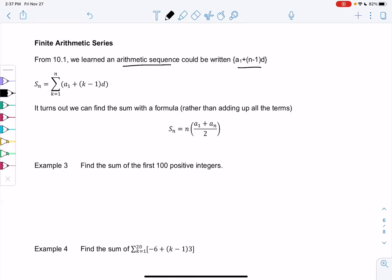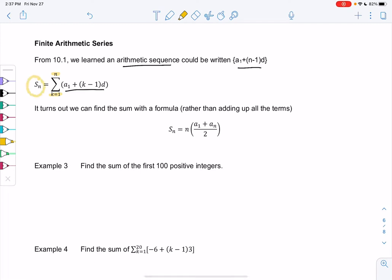In series form, we're going to take those individual terms, a1 plus k minus 1 times d. I'm just using a different letter, it's arbitrary. The sum is doing the first term through the nth term, and that'll be called s sub n, the sum of the first n terms.